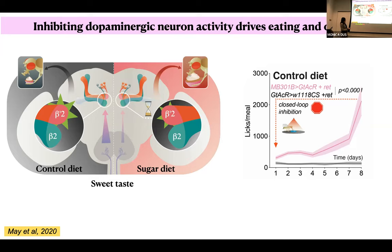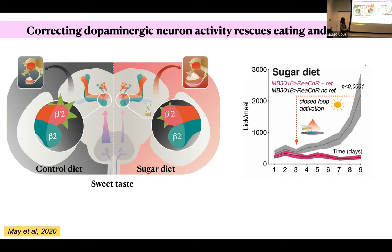On a high sugar diet, there was a decrease in dopamine neuron activity in response to sucrose and a delay of about 800 milliseconds, which would have a big impact on the ability of these neurons to provide the teaching signal and timing to make food associations. We then inhibited these dopaminergic neurons on a control diet using an inhibitory rhodopsin in a closed-loop system, and found that flies ate more. Conversely, on a high sugar diet, activating these neurons on day three protected the flies from overeating and diet-induced obesity.